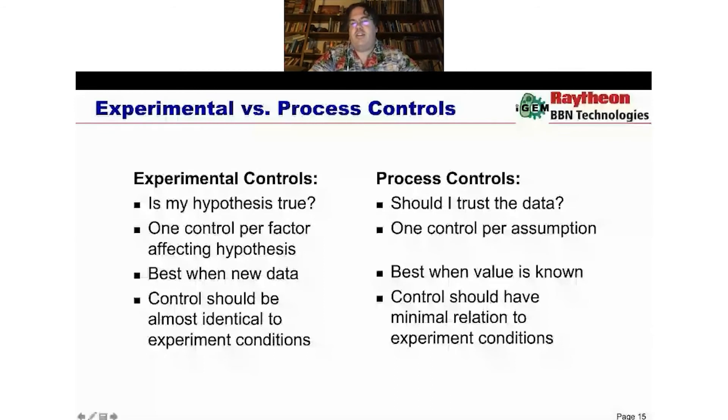With experimental controls, you want one control for each factor that's affecting the hypothesis. You want to be getting new data, and the controls should be almost identical to your experimental conditions, because that's very small difference is the thing that you want to check. Process controls, on the other hand, you want one control for every assumption that you don't want to be testing. So, if the experimental controls, there's one for each thing you do want to test, for the process controls, it's one thing for each thing you don't want to have to worry about in analyzing your experiment. You don't want to have to have a hypothesis that, oh, my flow cytometer wasn't working, oh, my plate reader was wrong. You want your hypotheses to all be about the biology.